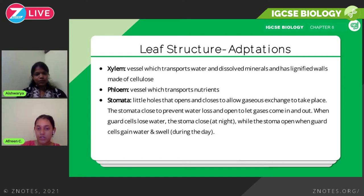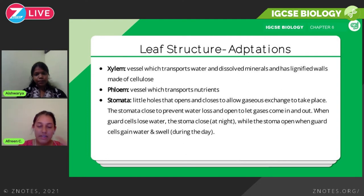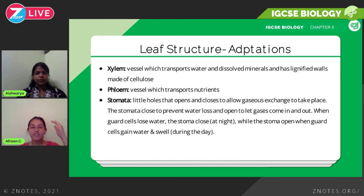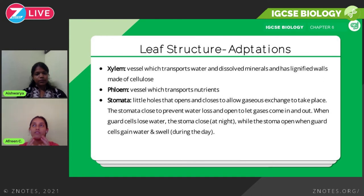Stomata also prevent undesirable movement of gases. During the night, the guard cells lose water so the stoma closes. During the day, the guard cells gain water and swell, so the stoma opens. This is why some leaves appear limp at night — guard cells are closed, so no water movement occurs — and more rigid in the morning, when water movement and gas exchange are happening.